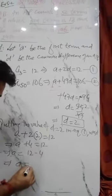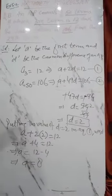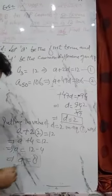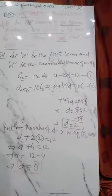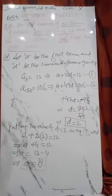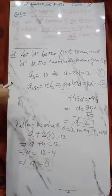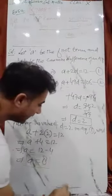So a value is 8, this is your a. Now a is found, d is also found. So you can find any term. Which one to find? 29th. So how will we find the 29th term?